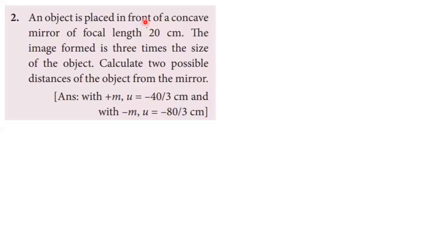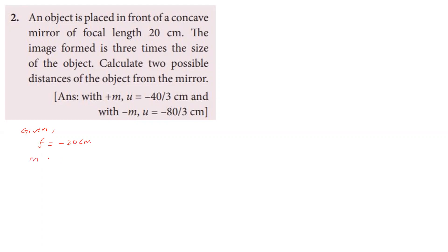Problem two: an object is placed in front of a concave mirror of focal length 20 centimeter. The image formed is three times the size of the object. Calculate the two possible distances of the object from the mirror. Given: focal length f equals minus 20 centimeter.